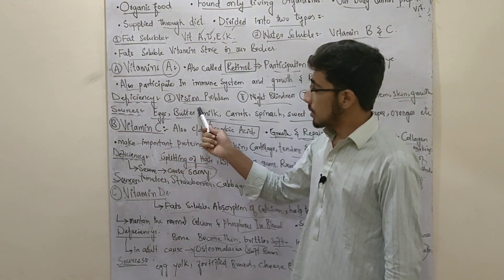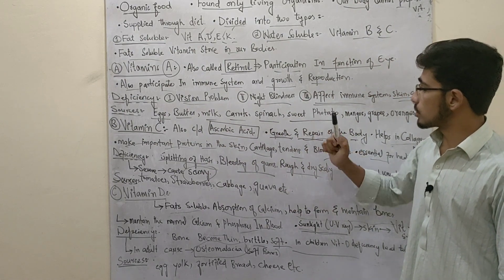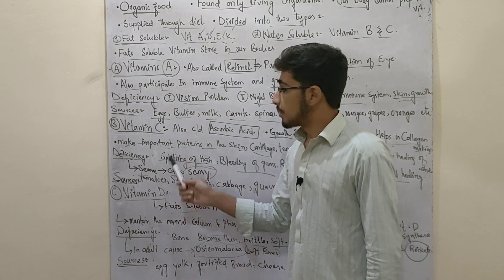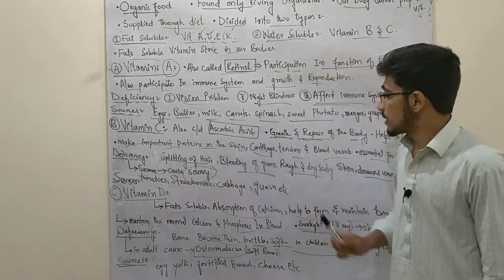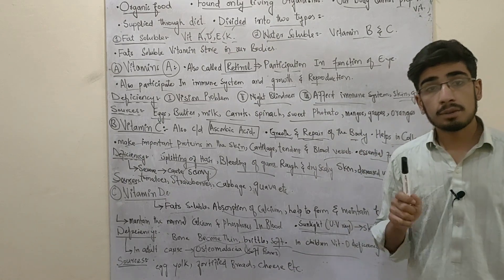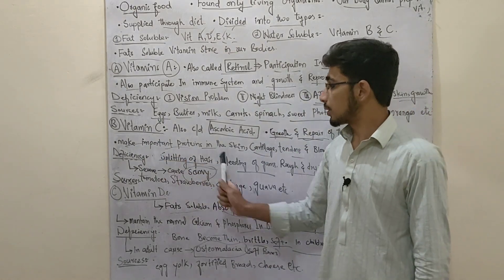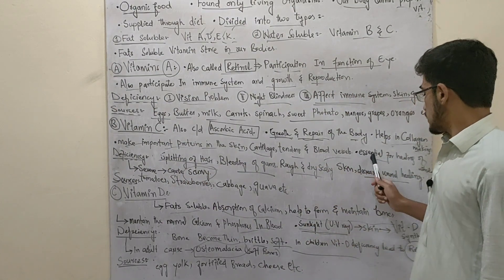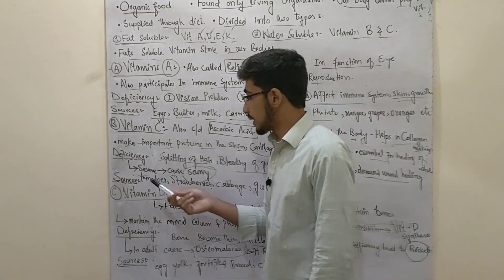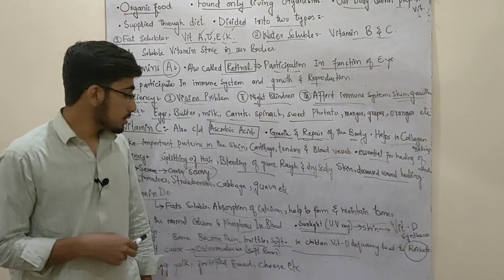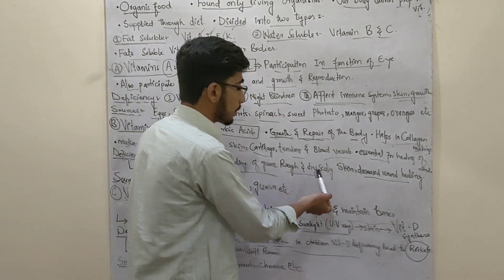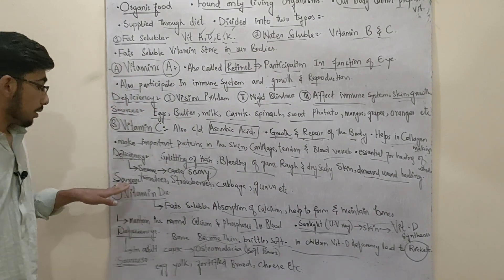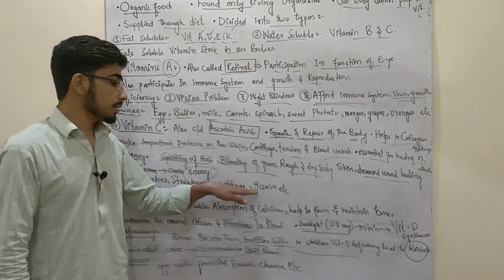Sources of vitamin A are egg, butter, milk, carrots, spinach, sweet potato, mangoes, and orange. Vitamin C, also called ascorbic acid, helps with growth and repair of the body, collagen fiber, and making important proteins in skin, cartilage, and blood vessels. Vitamin C deficiency causes scurvy — symptoms include spreading of hair, bleeding of gum, rough and dry skin, and decreased wound healing. Sources include tomatoes, strawberries, and cabbage.